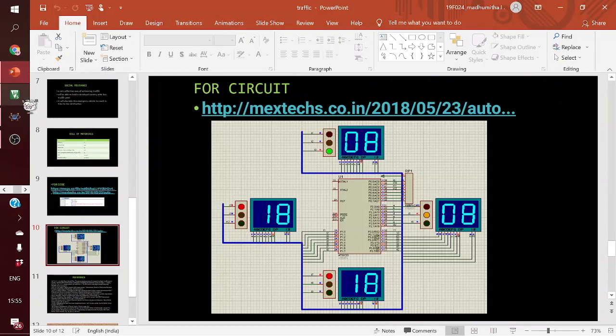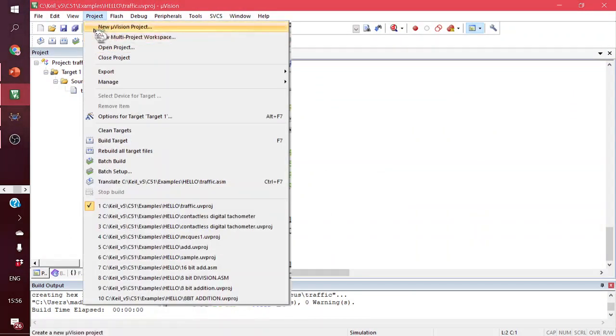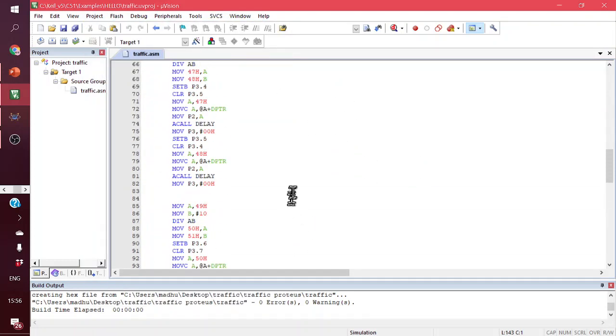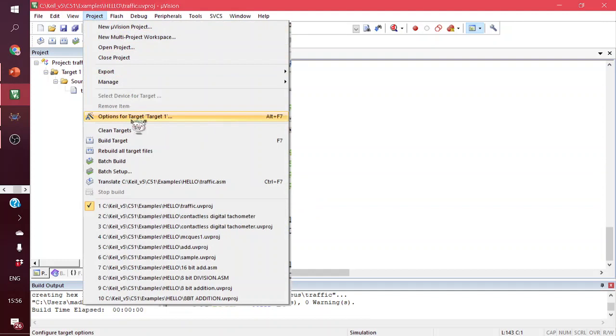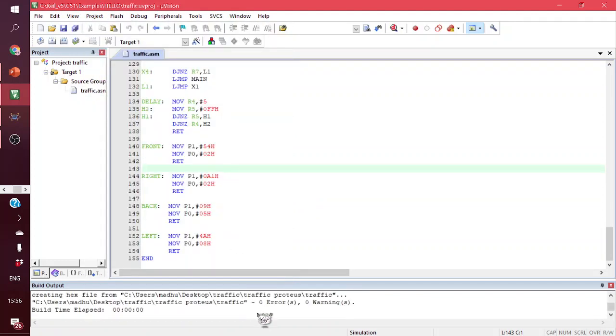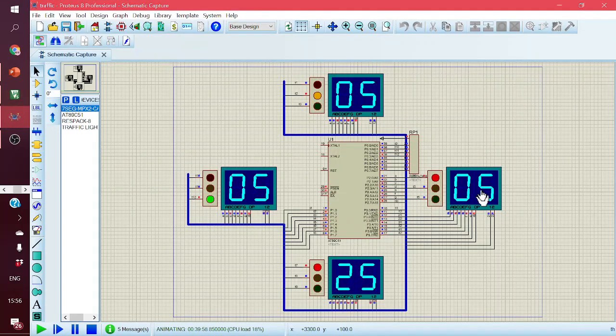I have already run this program. First we have to create a new project and get ready this program. I have already done this. First we have to build target. So here it shows at the bottom there is no error and no warning. Before we go into Proteus, we have to create a hex file so that we can get any error in that. I have already done this circuit and kept it ready.